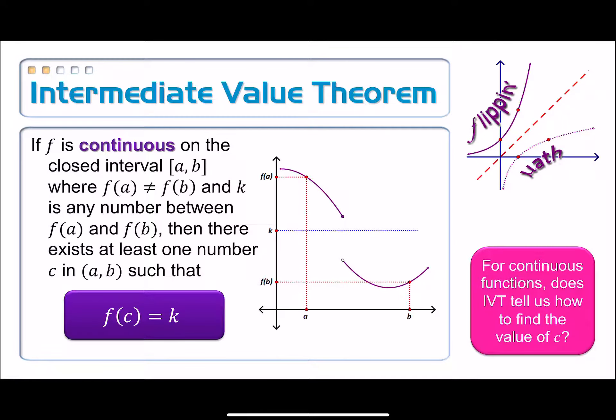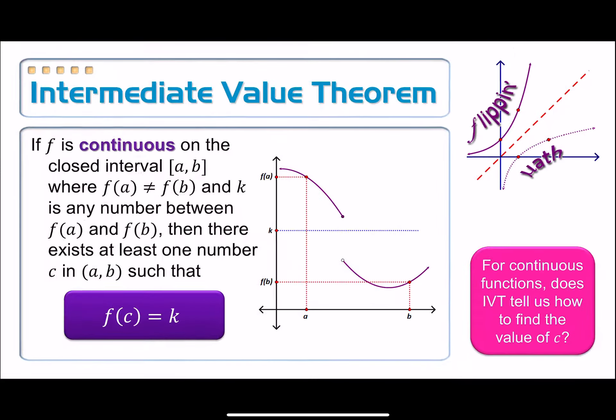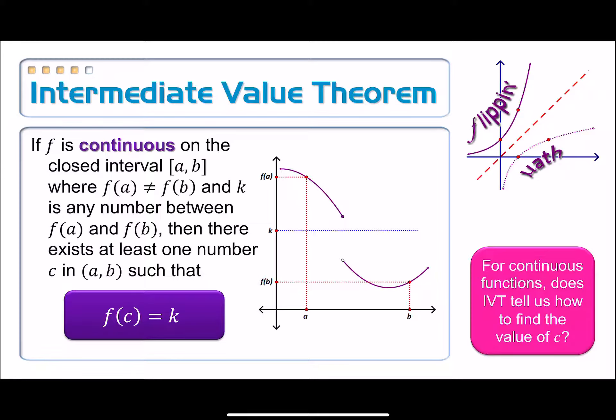All right, here is another question for you. For a continuous function, does the intermediate value theorem tell us where to find that c value? Well, it just gives us range. It just says it's between a and b, but it doesn't tell us exactly where that number is. In order to figure it out, we'll have to maybe do a little bit of algebra. This is an example of something that is called an existence theorem.